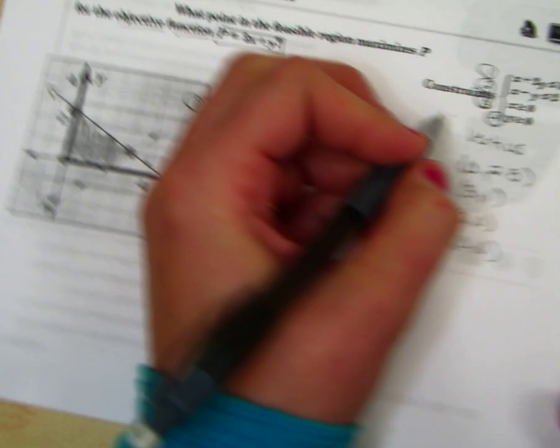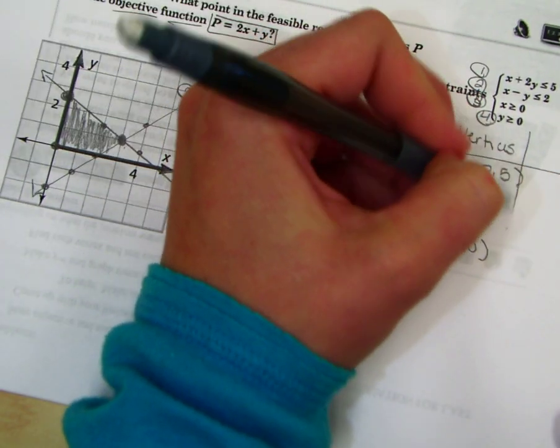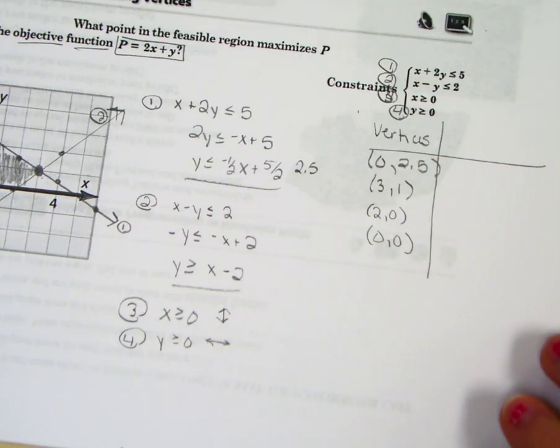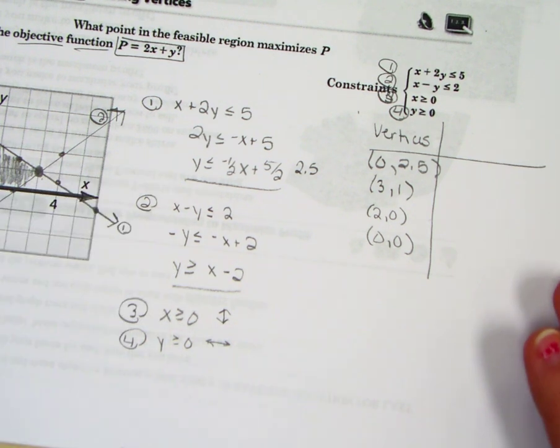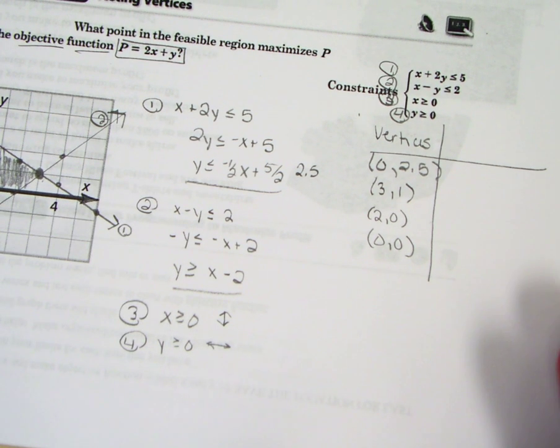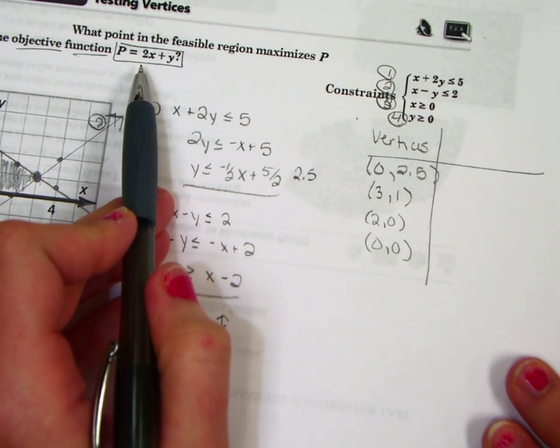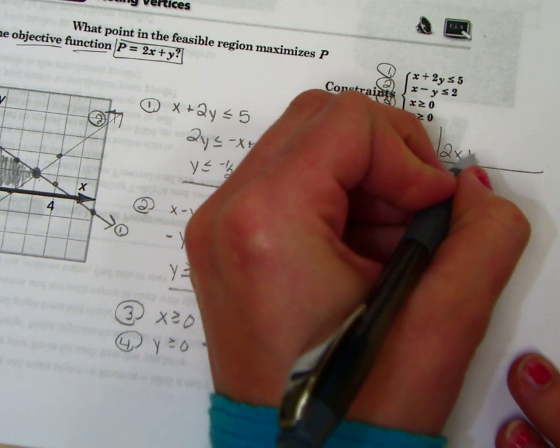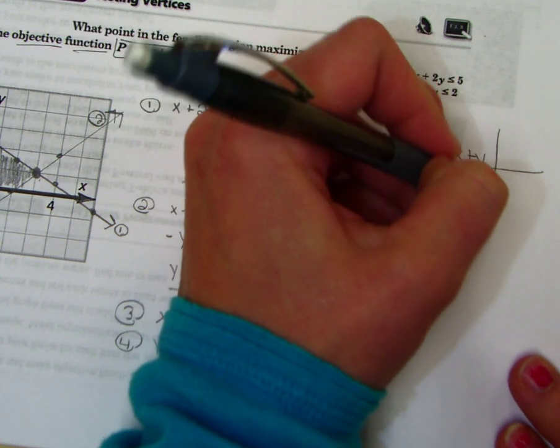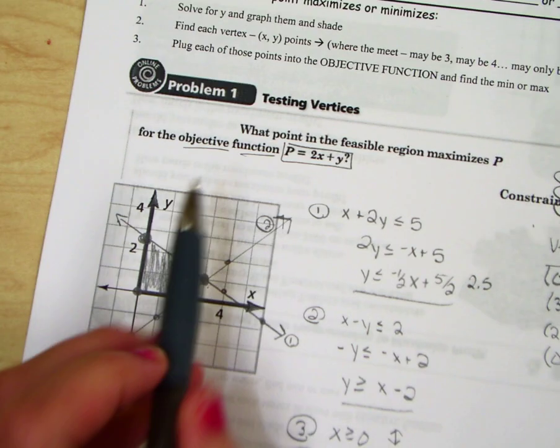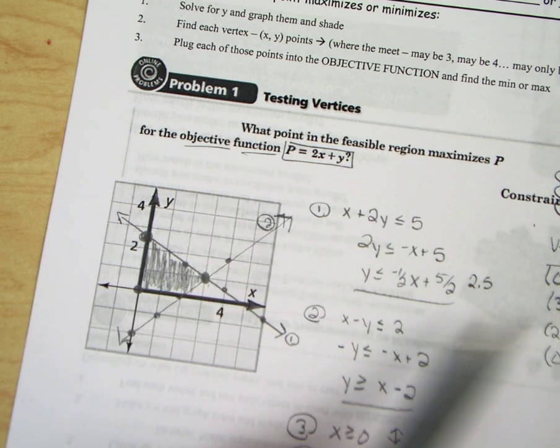So I have four vertices that need to be tested. Now I'm going to test those in my objective function. Again, you'll have your own objective function when it comes to word problems. They're giving it to you. There's the objective function. I told you we were going to save it until the end. So it's 2x plus y.